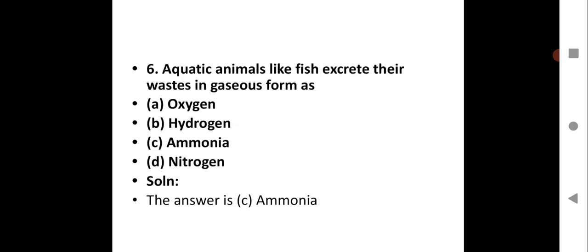Question number six - Aquatic animals like fish excrete their waste in gaseous form as - option A oxygen, option B hydrogen, option C ammonia, option D nitrogen. We have learned about the different excretory products by different living organisms and for fish, aquatic animals like fish will excrete ammonia.